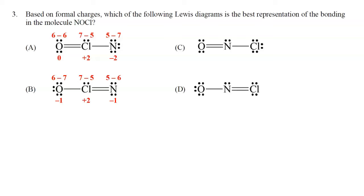For choice D: oxygen has 6 valence electrons, 6 dots and 1 bond, so 6 minus 7 is negative 1. Nitrogen has 5 valence electrons, 2 dots and 3 bonds, so 5 minus 5 is 0. Chlorine has 7 valence electrons, 4 dots and 2 bonds, so 7 minus 6 is positive 1. Now for choice C: oxygen gives 6 minus 6 equals 0; nitrogen gives 5 minus 5 equals 0; chlorine gives 7 minus 7 equals 0. All formal charges are zero in choice C.